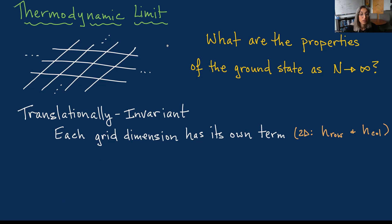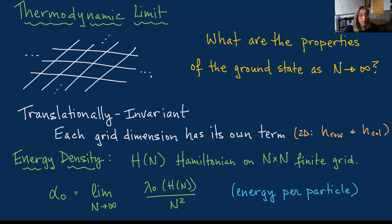This is naturally a translationally invariant setting, since you can't specify a local term on every edge of an infinite system. Typically there's a different term for each grid dimension. In a 2D system, one term is applied to every pair in the x-direction and another to every pair in the y-direction. We're interested in the energy density in the thermodynamic limit: if H(n) is the Hamiltonian on a finite n-by-n grid, we take the minimum energy per particle and let n go to infinity.